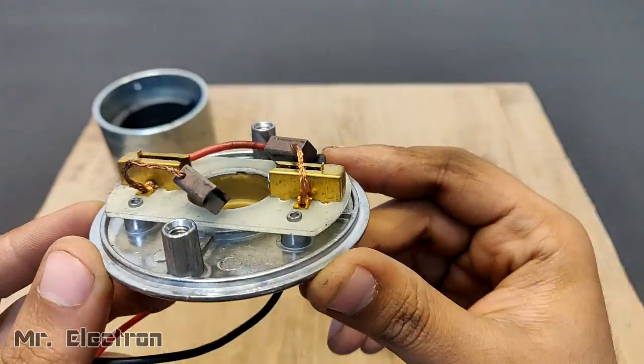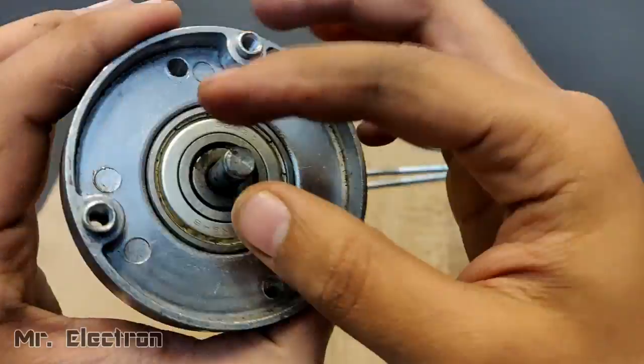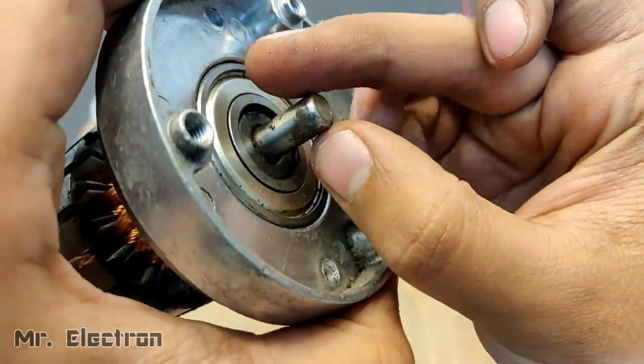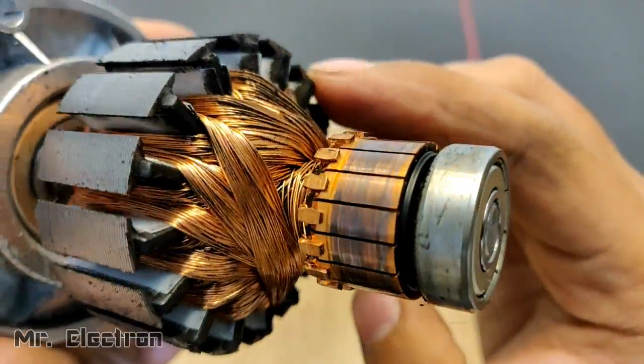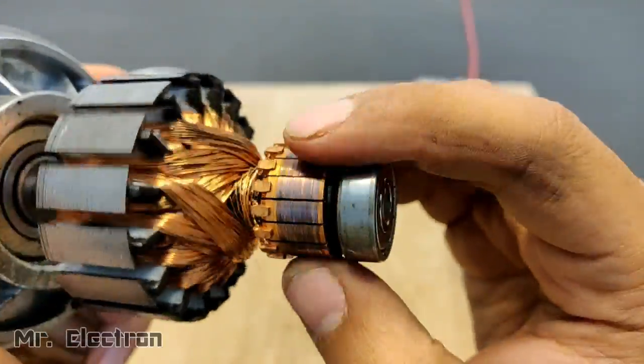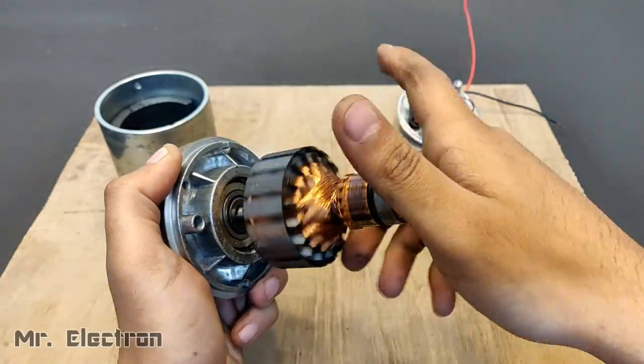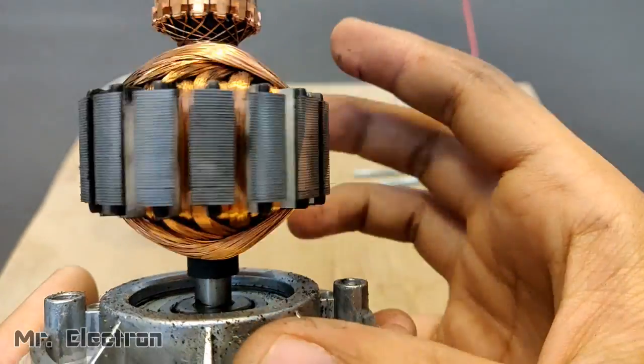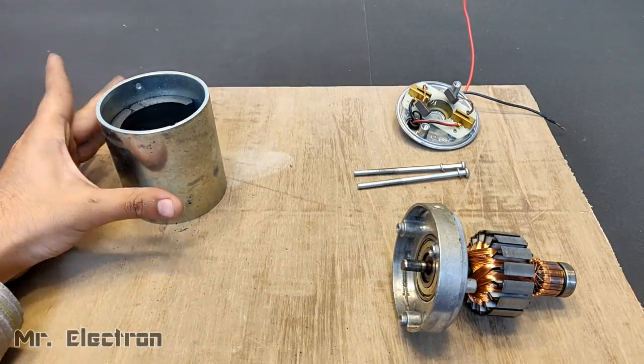You can see the commutator and the armature along with the brush setup. This means that it is a DC motor for sure. Guys, the armature, commutator, and bearings are pretty smooth and shiny. Although it was not that much good-looking from outside, it is as good as new from inside.